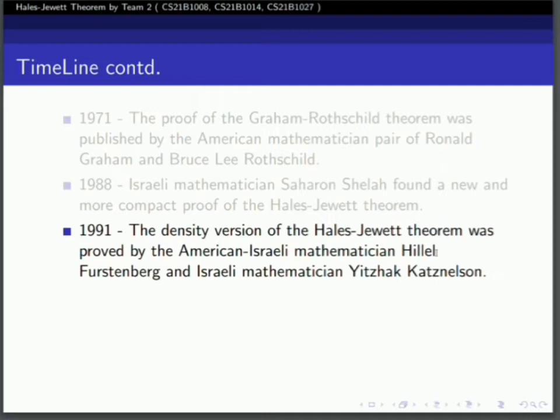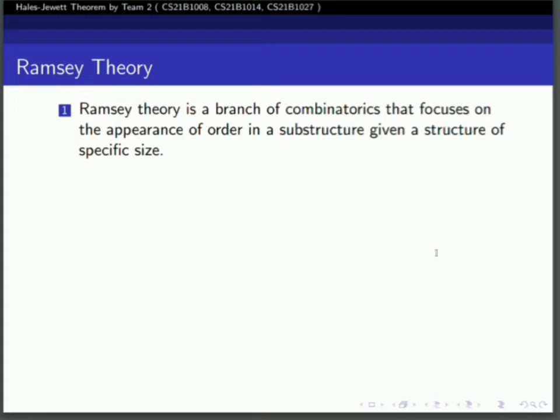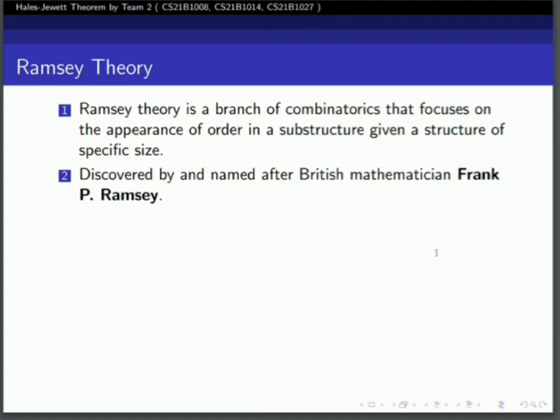In 1991, the density version of the Hales-Jewett theorem was proved by Hillel Furstenberg and Katznelson. Before jumping straight to the Hales-Jewett theorem, we first need to understand Ramsey theory. Ramsey theory is a branch of combinatorics that focuses on the appearance of order in a substructure given a structure of specific size. It deals with finding order amongst apparent chaos.